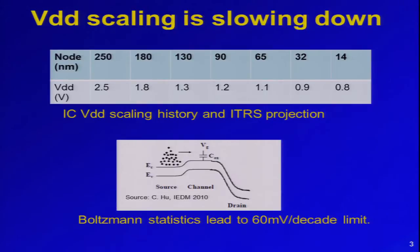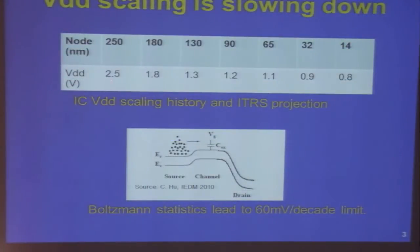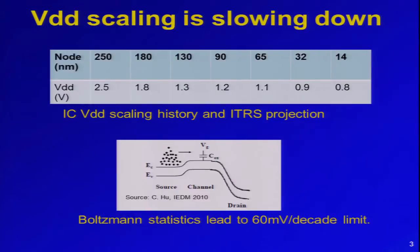Transistor scaling in the last few decades has enabled the transistor size to keep scaling down, and at the same time the voltage supply is also scaling down. At the 250 nanometer node the voltage was 2.5V, at 180nm it was 1.8V, at 130nm it was 1.3V. So at the 40 nanometer node we should be looking at 0.14V VDD if it scaled accordingly. However, we're looking at 0.8V, which means we are wasting about 30 times energy if VDD had continued to scale.